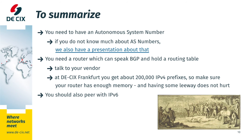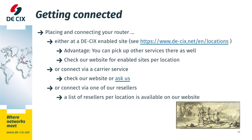Of course, if you peer, you should also peer with IPv6. To get connected, select the site you want to get connected to and place and connect your router. You can either co-locate it at one of our enabled sites, or you can do remote peering via a carrier or via one of our resellers. If in doubt, just ask us.